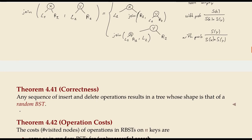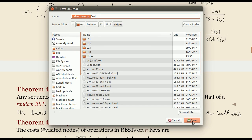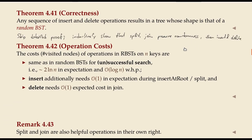We will skip the detailed proof. The idea is that you show inductively that the operations split and join have this randomness-preservation property, as I sketched. Then another induction shows that insert and delete have the same property. It's not really a very complicated proof; we just have more pressing topics to discuss in this class.